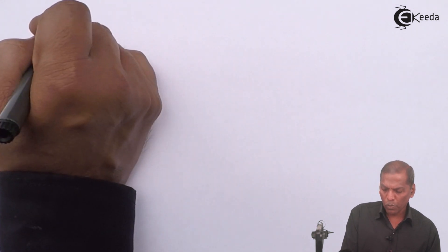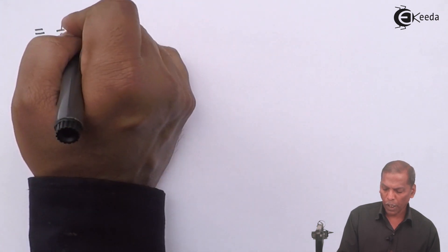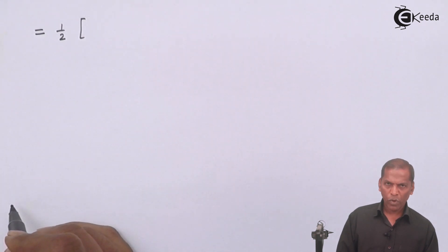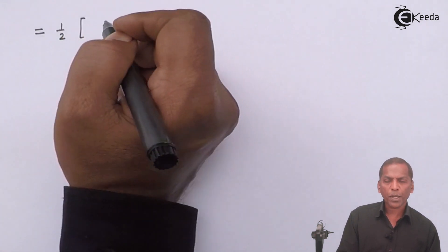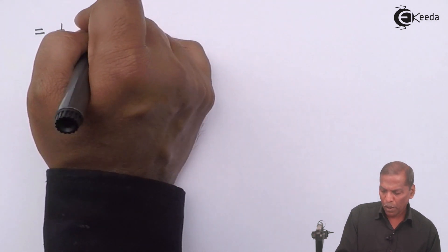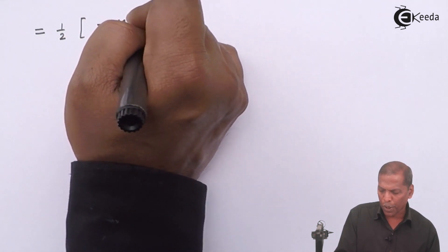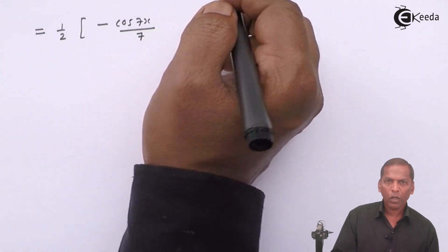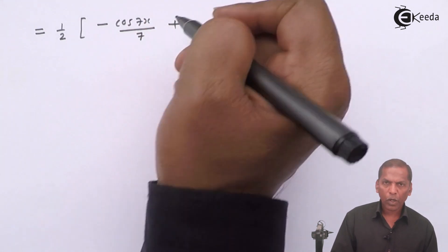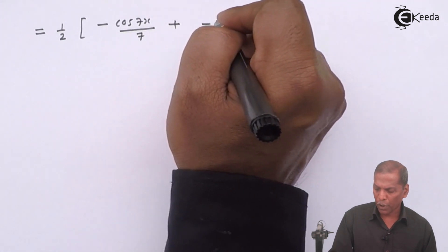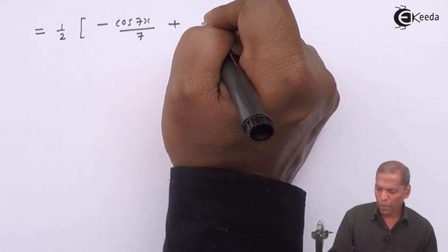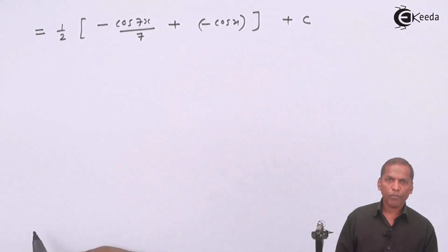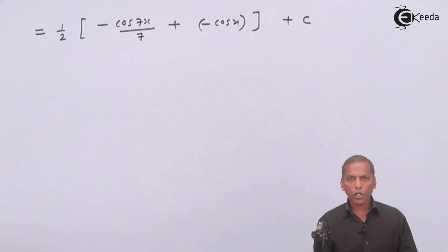So this is equal to (1/2) in bracket. Now the integration of sin(x) is −cos(x), and therefore integration of sin(7x) is −cos(7x) divided by the coefficient of x, which is 7. Then plus the integral of sin(x) gives −cos(x). And finally, we write plus C, where C represents the constant of integration.